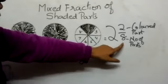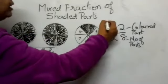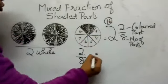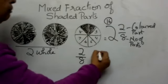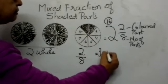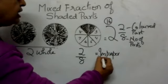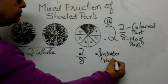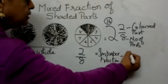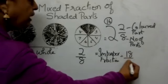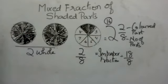We have to multiply the denominator with the whole number. Eight multiplied by two is sixteen, and plus two equals eighteen. So the improper fraction is eighteen by eight.